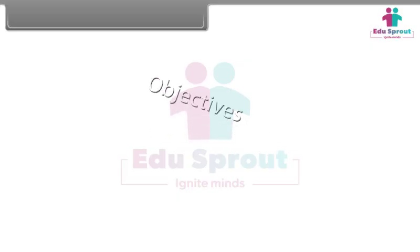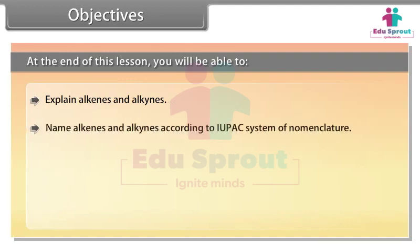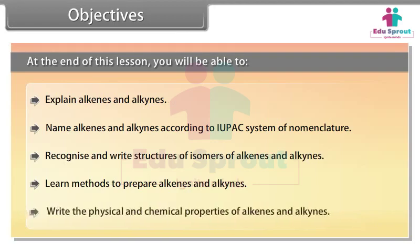Objectives: At the end of this lesson, you will be able to explain alkenes and alkynes, name alkenes and alkynes according to the IUPAC system of nomenclature, recognize and write structures of isomers of alkenes and alkynes, learn methods to prepare alkenes and alkynes, and write the physical and chemical properties of alkenes and alkynes.